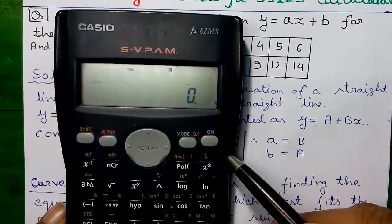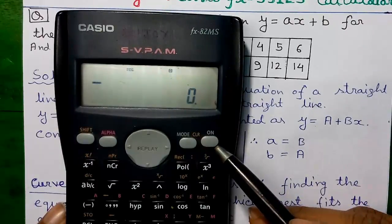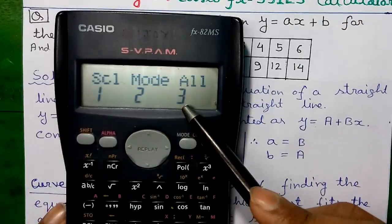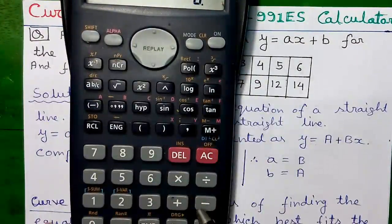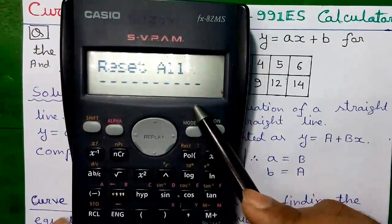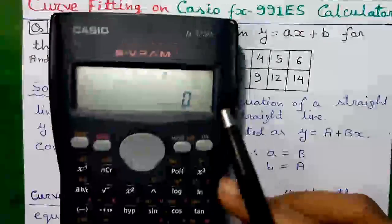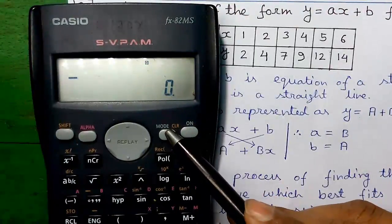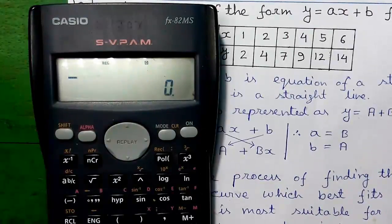Next we will do linear regression on the calculator. First we have to clear the calculator memory. Press Shift and the Mode button, then enter 3 to clear all. Press 3 and the equals button. Everything resets — press the AC button to clear the screen. Now press Mode and 3 for regression, then 1 for linear regression.